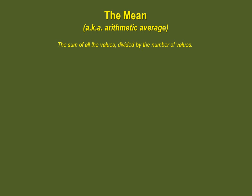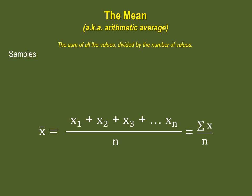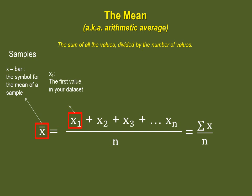The first central tendency measure we'll see is the mean, which you may know as the average. Simply put, the mean is the sum of the values divided by the total number of values. Here's the equation for the mean of a sample, where we have x-bar, the symbol for the mean of a sample.